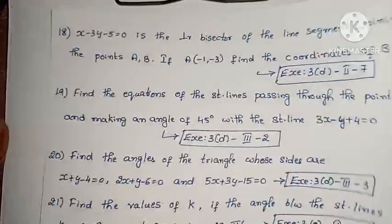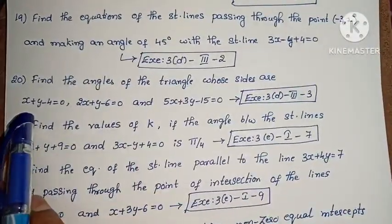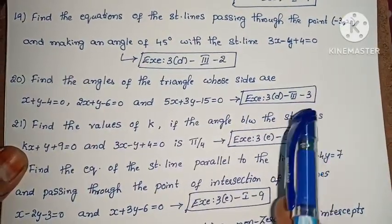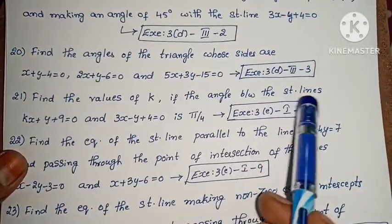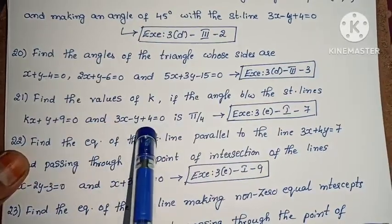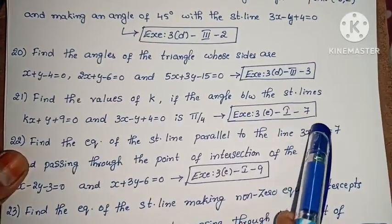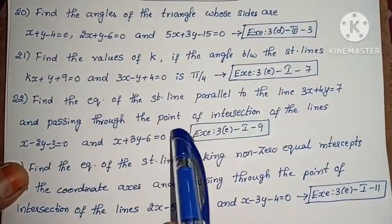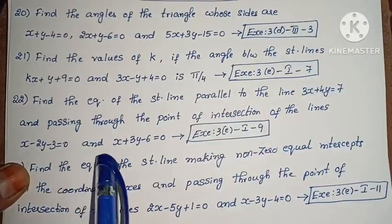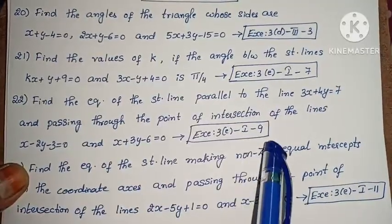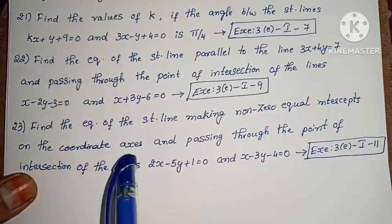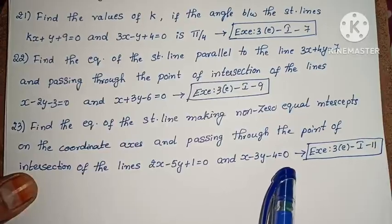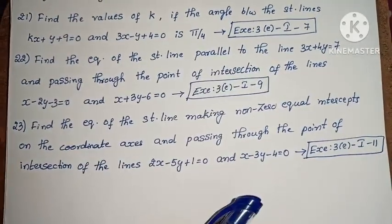Next, find the angles of the triangle whose sides are x plus y minus 4 equals to 0, 2x plus y minus 6 equals to 0, and 5x plus 3y minus 15 equals to 0. Next, find the values of k if the angle between the straight lines kx plus y plus 9 equals to 0 and 3x minus y plus 4 equals to 0 is pi/4. Next, find the equation of the straight line parallel to 3x plus 4y equals to 7 and passing through the point of intersection of x minus 2y minus 3 equals to 0 and x plus 3y minus 6 equals to 0. Next, find the equation of the straight line making non-zero equal intercepts on the coordinate axis and passing through the point of intersection of 2x minus 5y plus 1 equals to 0 and x minus 3y minus 4 equals to 0. These are the 4 marks problems.